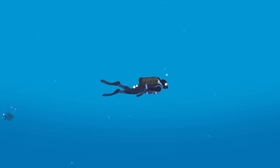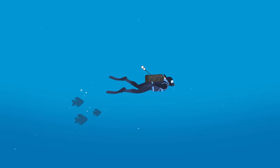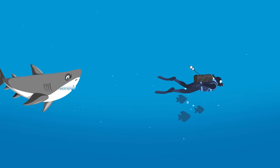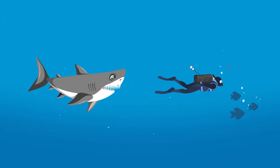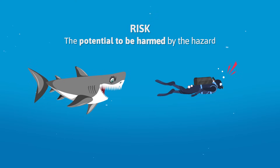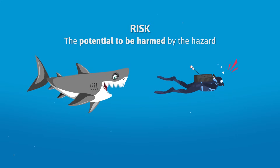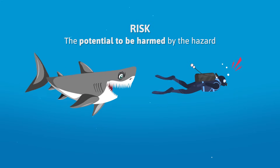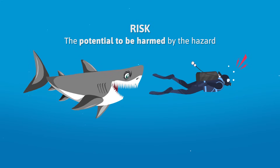Now imagine a diver exploring the ocean. As they swim along, they come across a shark, which we can identify as a hazard. When we introduce human exposure to a hazard, such as the diver in this scenario, the risk presents itself. In this case, the risk is the potential harm faced by the diver due to the presence of the shark. To put it simply, a shark in the sea is a hazard, but swimming with a shark is a risk.